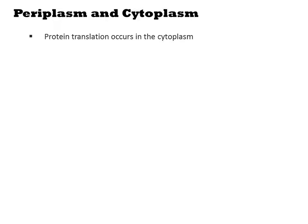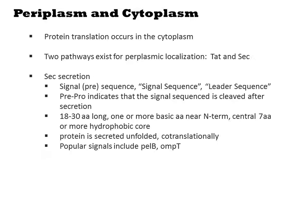All proteins start their life in the cytoplasm, so the cytoplasm is the default location of a new protein in the absence of other targeting mechanisms. Two pathways exist for periplasmic localization: TAT and SEC. SEC secretion involves a signal sequence, also called a leader sequence or pre-sequence. Often a gene will employ a pre-pro sequence on the N-terminus which is cleaved after transport completes. Pre-pro sequences are typically 18-30 amino acids long and contain one or more basic residues near the N-terminus and a central 7-amino acid hydrophobic core.